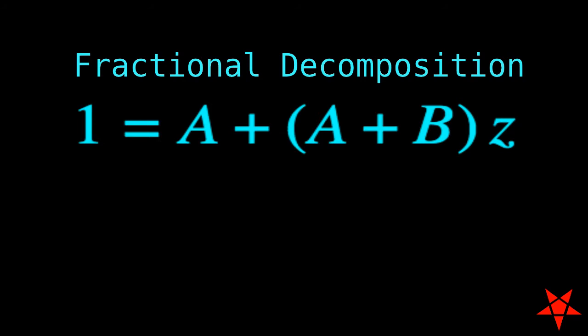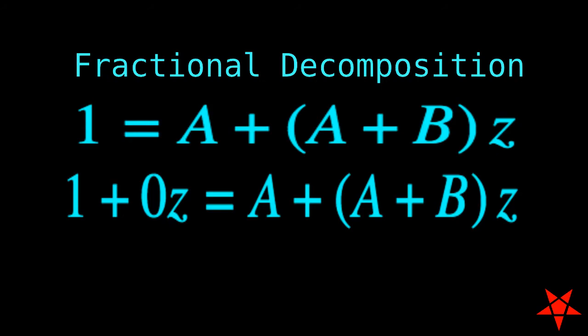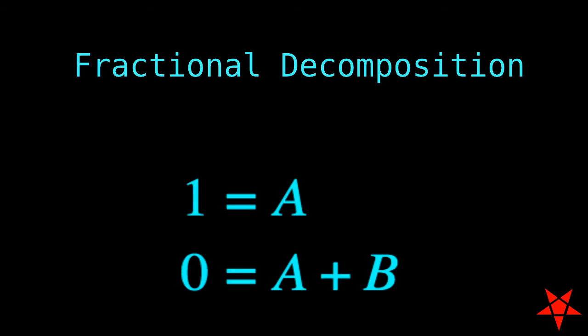And even though the left-hand side is just the number 1, we can express it as 1 plus 0 times z. Thus, we have coefficients on both sides for the components that are and are not multiples of z. And since the coefficients must be equal for both components of the equation, we now have two separate equations.